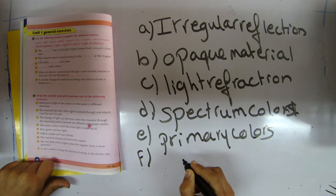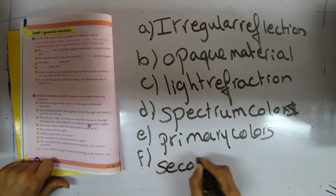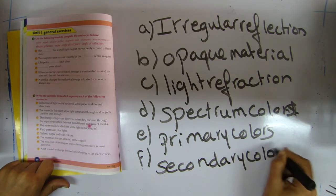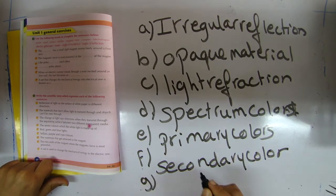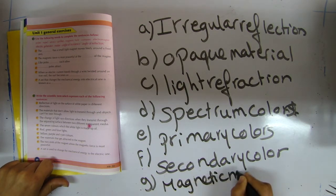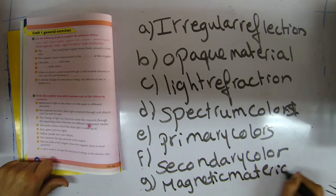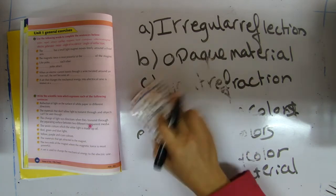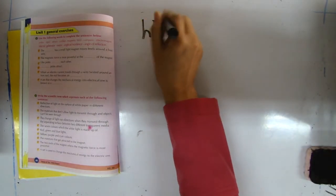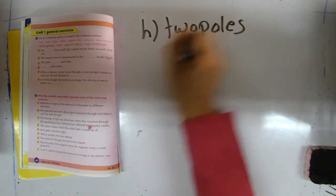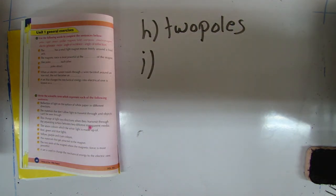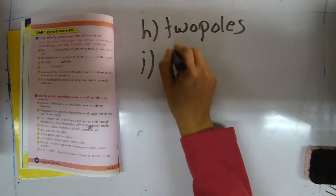Number six: yellow, purple, and cyan are secondary colors. Number seven: the material that gets attracted to the magnet is called magnetic material. Number eight: the two ends of the magnet where the magnetic force is most powerful are the two poles. Number nine: the device used to change mechanical energy to electric energy is called a dynamo.